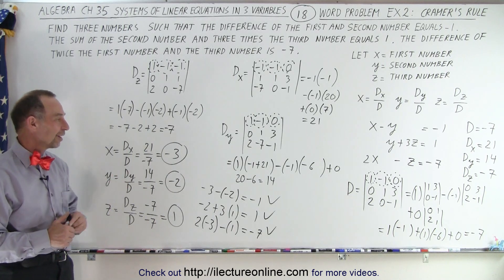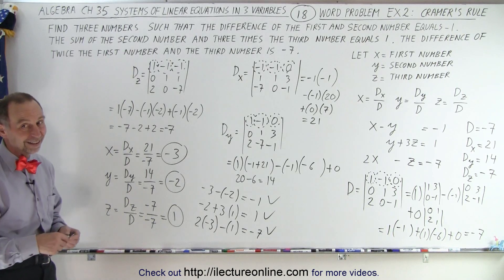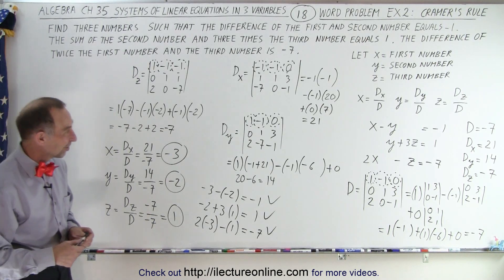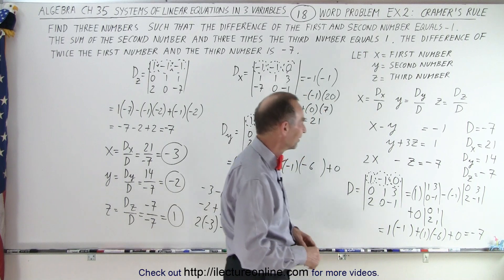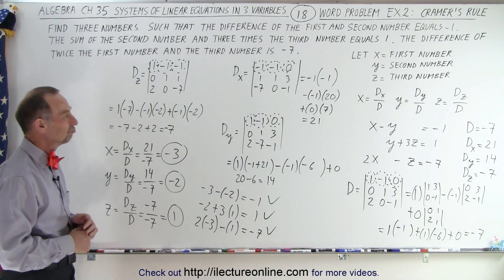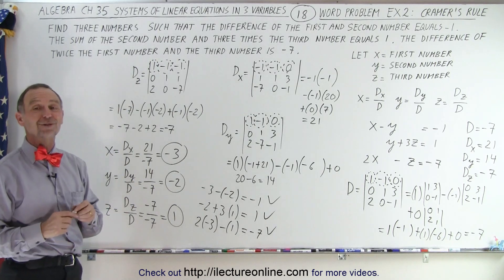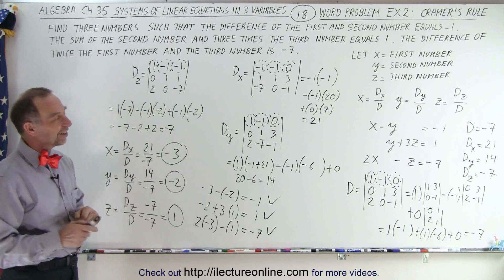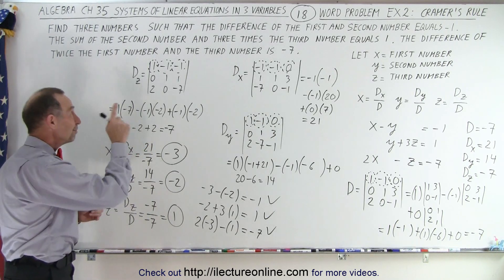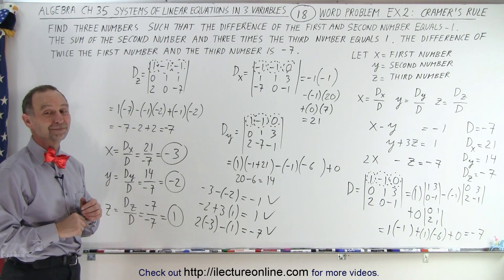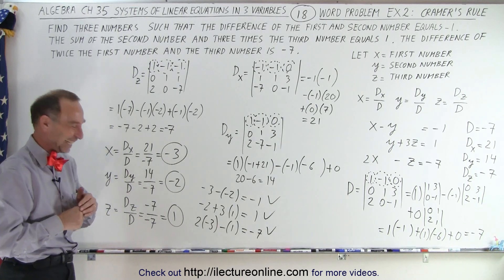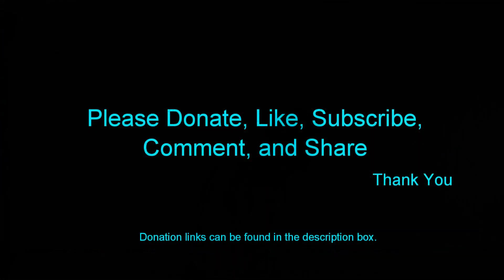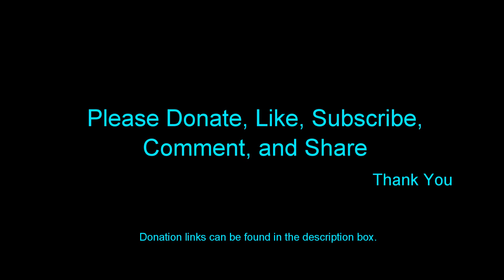Once you get one of the variables, you can substitute and use a combination of the equations. But the reason we go back to the original problem to verify is that we might have made a mistake in writing the equations down, and then the numbers wouldn't match the original problem. So there is a reason for the madness.